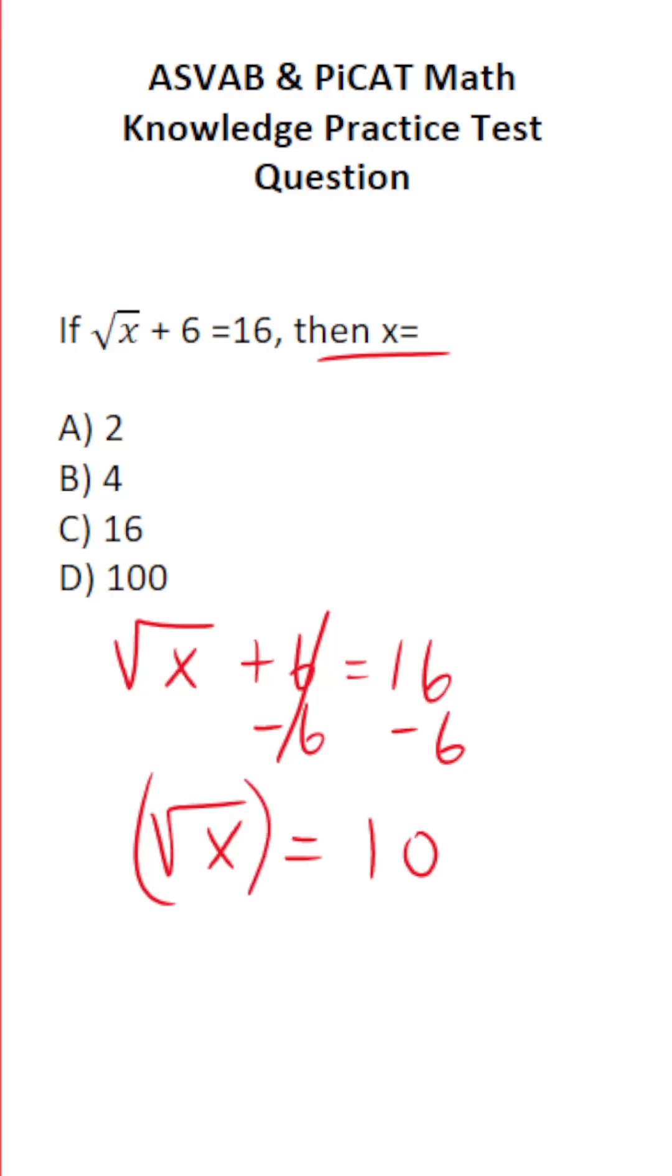To get rid of this square root, we're going to square both sides of our equation. The square of a square root, just cancel those out, leaving you with x over here. 10 squared is the same thing as 10 times 10, which is 100.